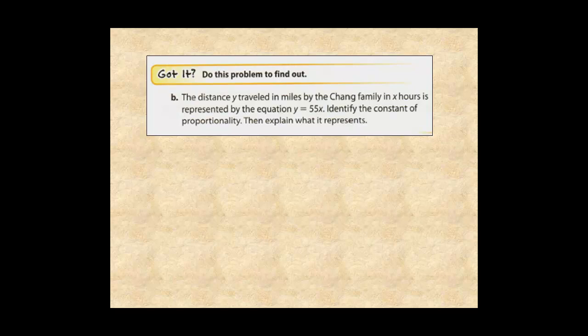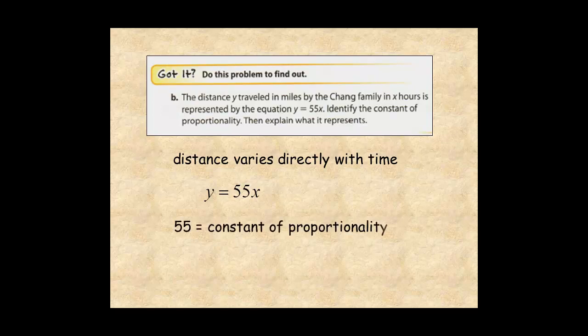If you think you've got it, pause the video and try this problem. Distance varies directly with time, and is defined by the equation y equals 55x. 55 is the constant of proportionality, and represents the unit rate of speed, 55 miles per hour.